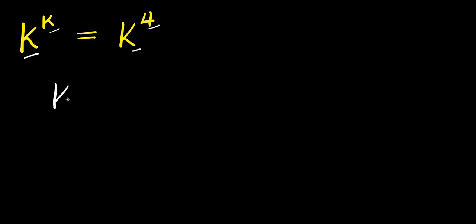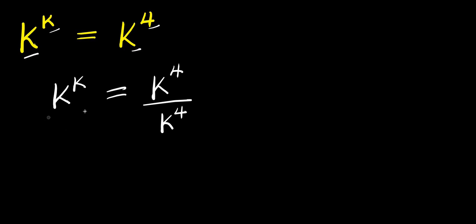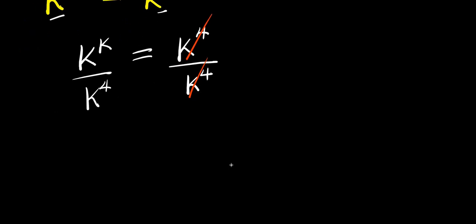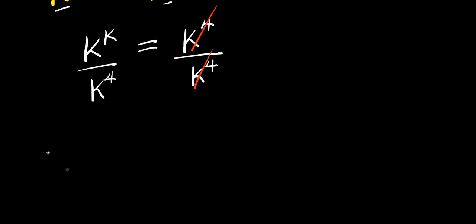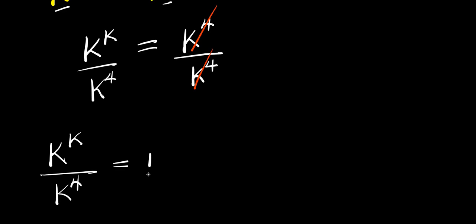I have k^k equals k^4. I can decide to divide both sides by k^4, which eliminates k^4 on the right side, leaving k^k divided by k^4 equals 1.